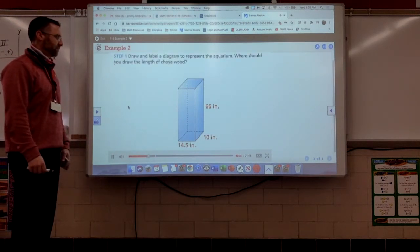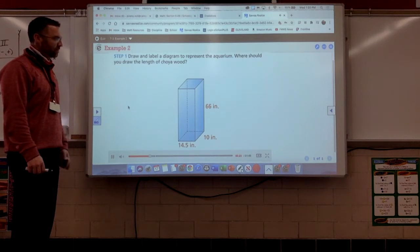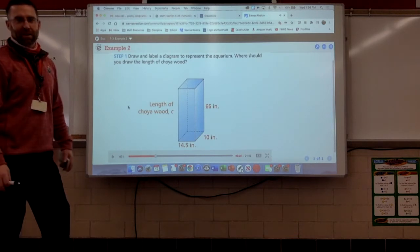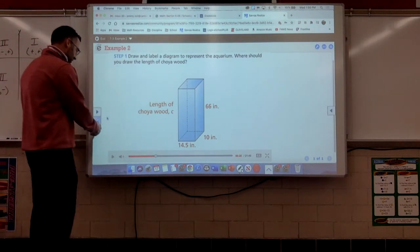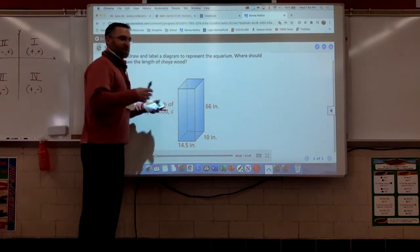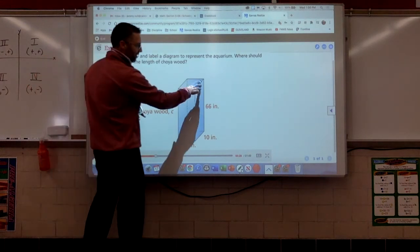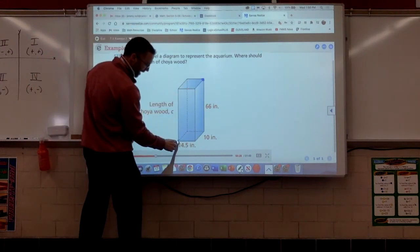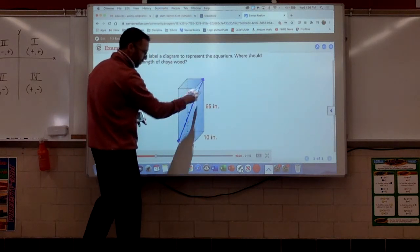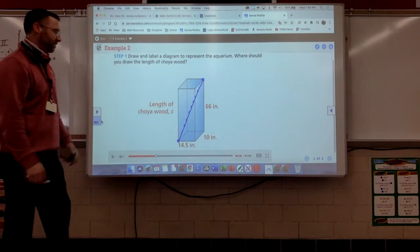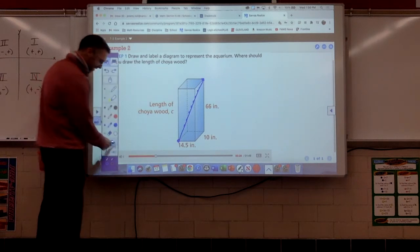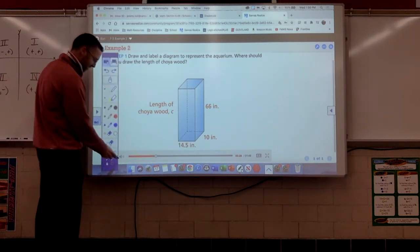The first step is to draw and label a diagram to represent the aquarium. Where should you draw the length of cholla wood? Everybody loves some good cholla wood. So, to find the length, what we're thinking about, the longest part of a rectangular prism is the distance from one corner to its opposite corner. It's this diagonal. That looks like fun. So, that's going to be where we draw the length of cholla wood. Cholla wood. Fun to say. I love cholla wood. It's fun to say. Here we go.